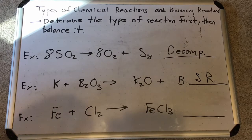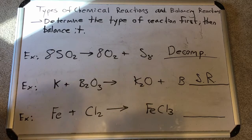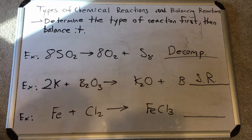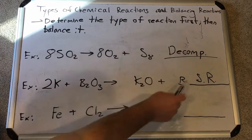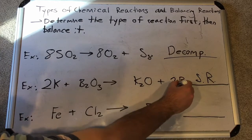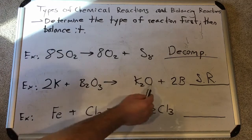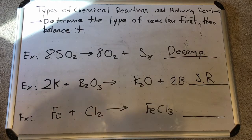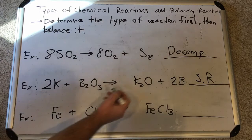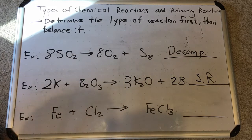It's not balanced yet, so let's do that. Look at potassium first: there's one on the reactant side but two in potassium oxide on the product side. Multiply the K on the reactant side by 2. Now boron: two on the reactant side, one on the product side — multiply the boron product by 2. Boron is now balanced, but oxygen: there are three oxygens in B2O3 and only one in K2O — so triple the K2O to get three oxygens on each side.